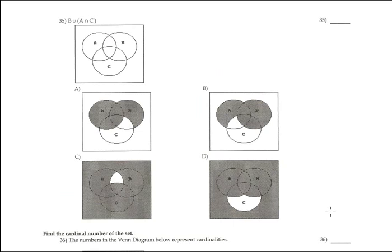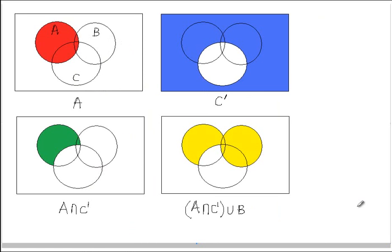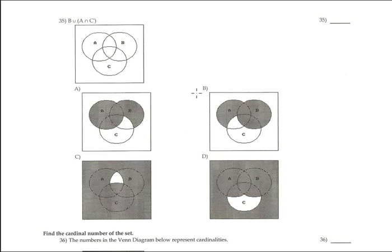Problem 35: B∪(A∩C'). Step by step: A is the red region, C complement is outside C — the blue region. A∩C' is the common part between the red and blue parts — the green part. Then union B brings in the B region together with the green part. The final answer for problem 35 is B.